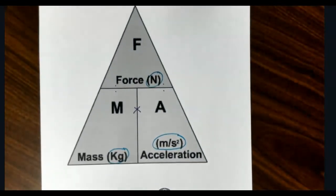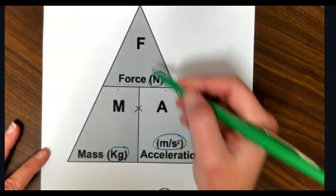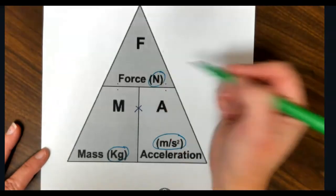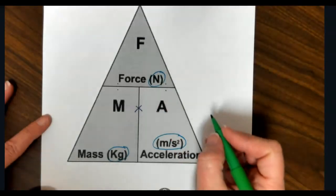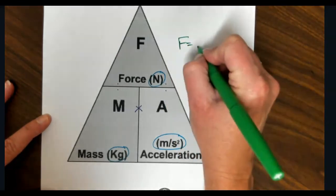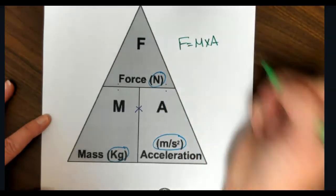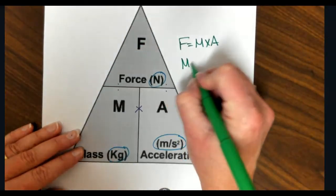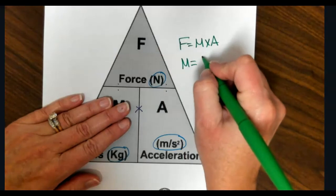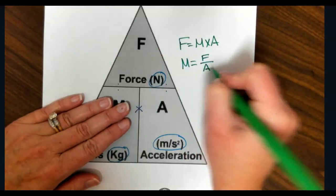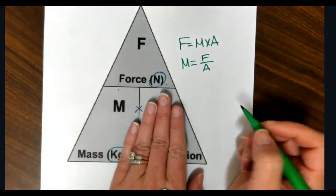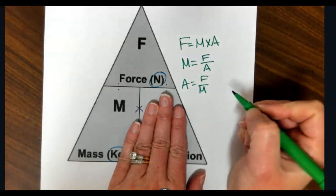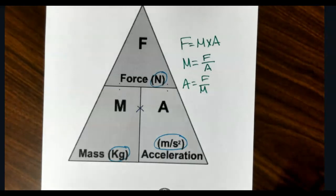Don't forget how to use your triangle. So we have force, mass, and acceleration. So for this, force is always on top. So if I'm solving for force, force equals mass times acceleration, because I cover the F, M times A. If I'm solving for mass, mass equals force divided by acceleration. If I'm solving for acceleration, force divided by mass. So make sure you look at those carefully.